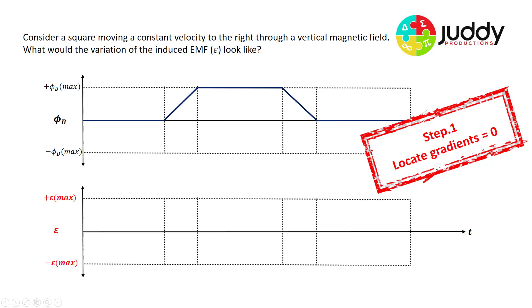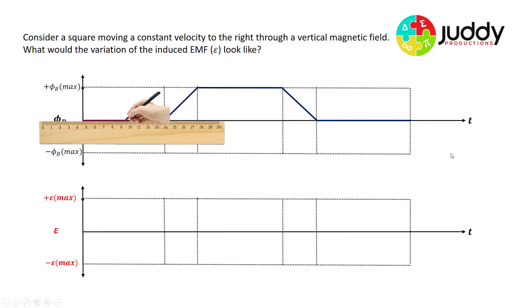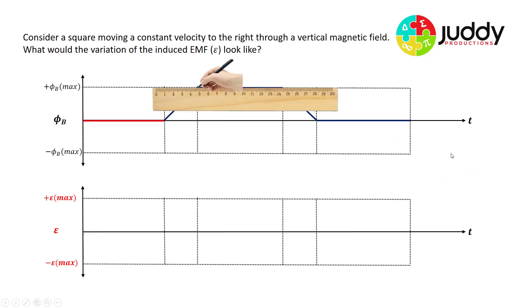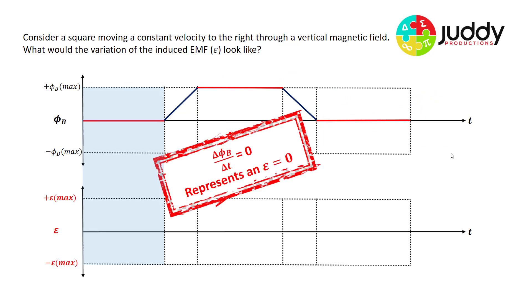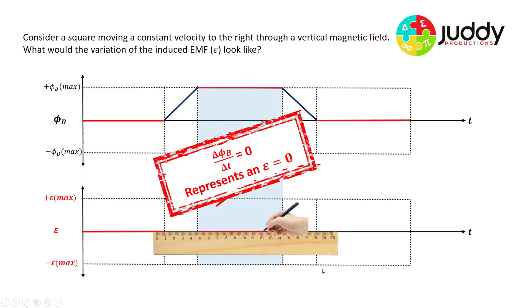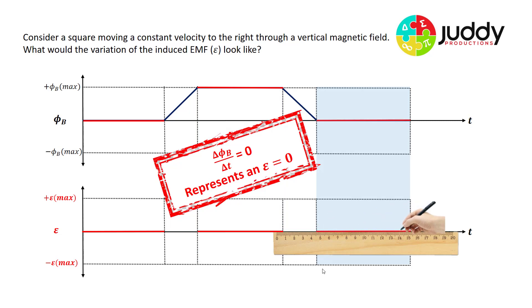Step one: locate the gradients equal to zero. Here's our first gradient of zero, our second, and our third. Gradients of zero induce EMFs of zero. For the first section with a gradient of zero, that represents an EMF of zero. Likewise in the second and third sections, gradient of zero represents an EMF of zero.